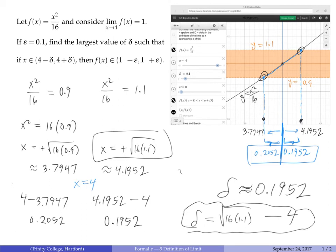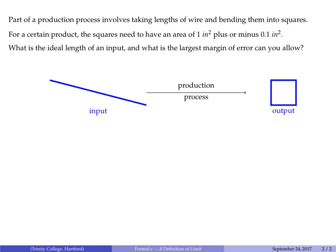Now I want to switch gears and consider a seemingly totally separate problem. You work at a company where part of a production process involves taking lengths of wire and bending them into squares. Depending on the length of the input wire, the square will have a different area, and for a certain product we need squares that are exactly one square inch.